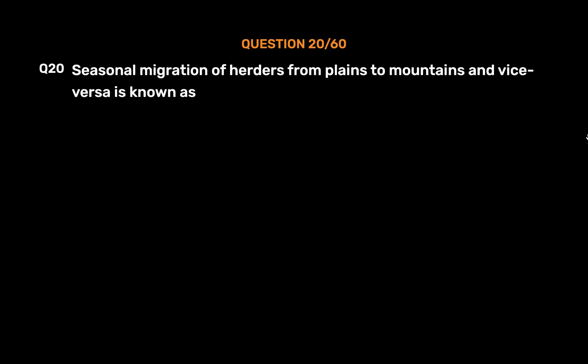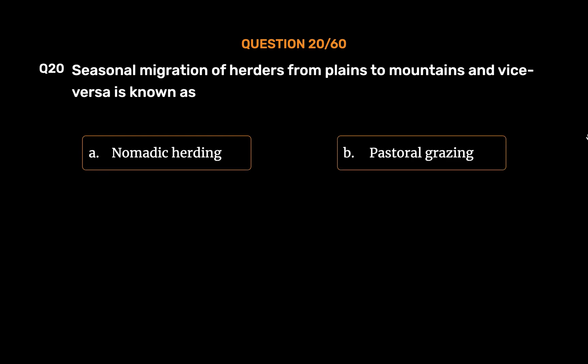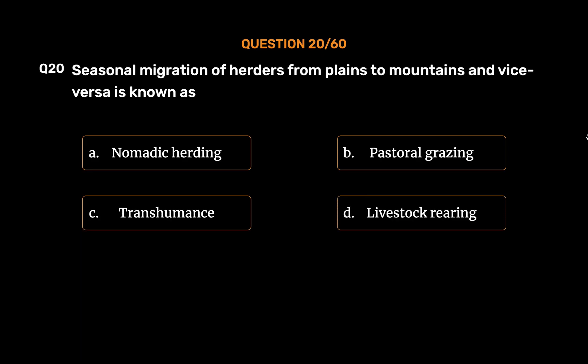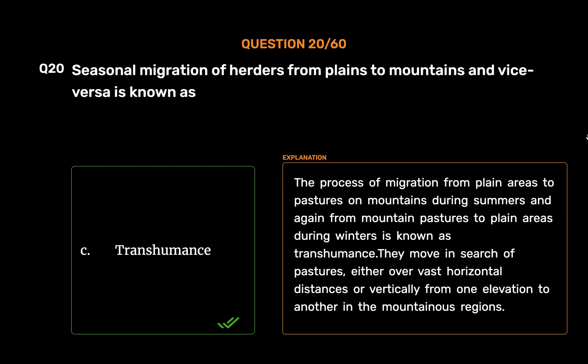Question number 20: Seasonal migration of herders from plains to mountains and vice versa is known as — option A: nomadic herding, option B: pastoral grazing, option C: transhumance, option D: livestock rearing. The correct answer is option C, transhumance. The process of migration from plain areas to pastures on mountains during summers and back to plain areas during winters is known as transhumance. They move in search of pastures either over vast horizontal distances or vertically from one elevation to another in mountainous regions.